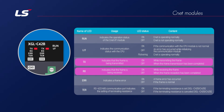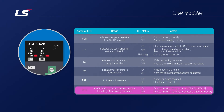The TX LED lights up when data is sent, and the RX LED lights up when data is received. The ERROR LED lights up when an error occurs. TER LED is an LED related to terminating resistance. When communicating with RS-422/485, you can activate the terminating resistor in XG5000. TER LED lights up when the terminating resistor is active.